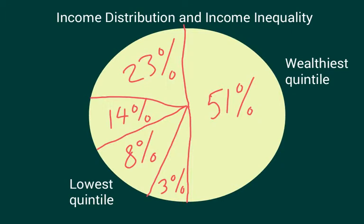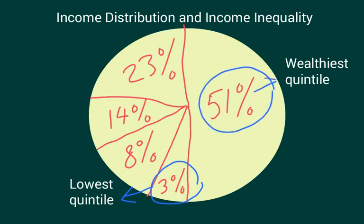If we look at the income distribution for all households in the United States, we notice that the lowest quintile — the poorest 20% of all income earners — earns about 3% of all income. I've rounded all these numbers to whole numbers. The wealthiest 20% earns about 51% of all income. The second quintile earns 8%, the third quintile earns 14%, and 23% of all income is earned by the fourth quintile.